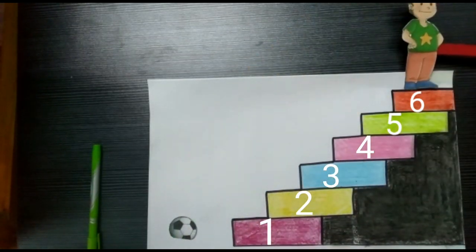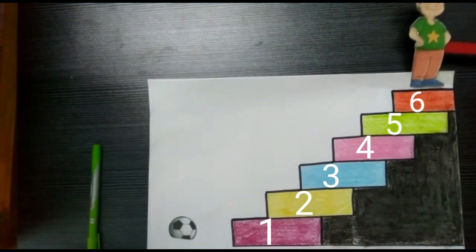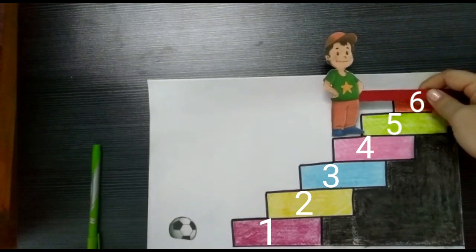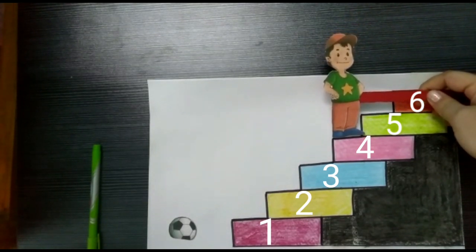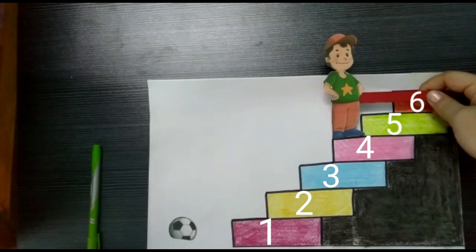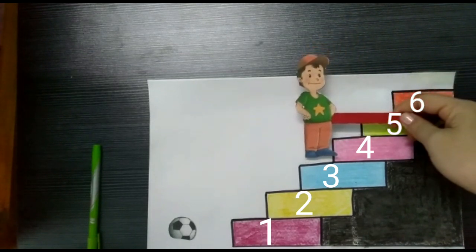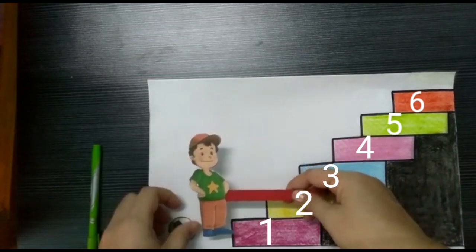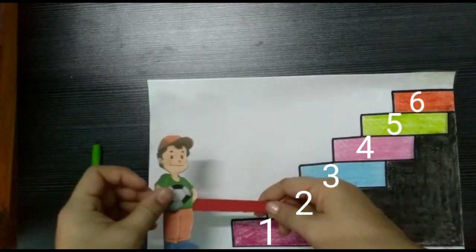So, when he starts moving from upstairs, 6, 5, 4, the number keeps decreasing from big number to small number. 3, 2, 1. And finally, he catches the football.